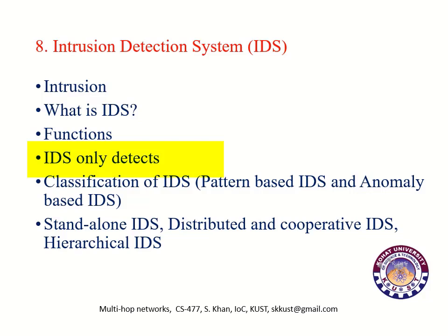Intrusion detection systems are considered passive defense as they are not intended to prevent attacks. Instead, they alert the network administrator about a possible attack in time to stop or reduce the impact of the attack. The accuracy of an intrusion detection system is generally measured in terms of false positives and false negatives, where an ideal IDS attempts to minimize both.